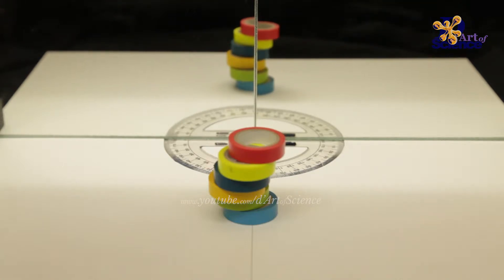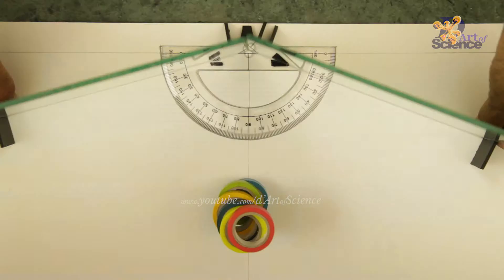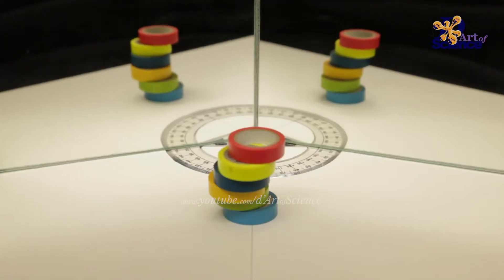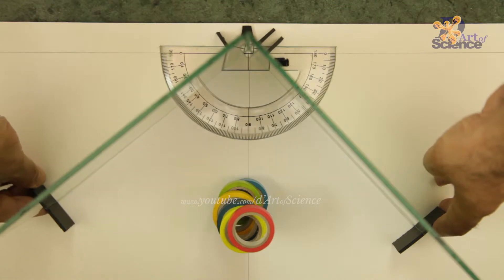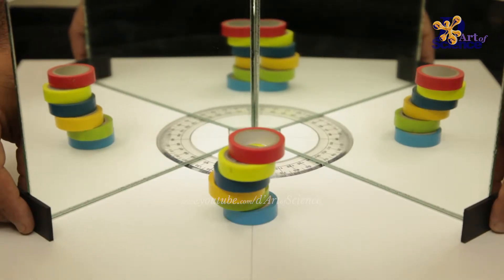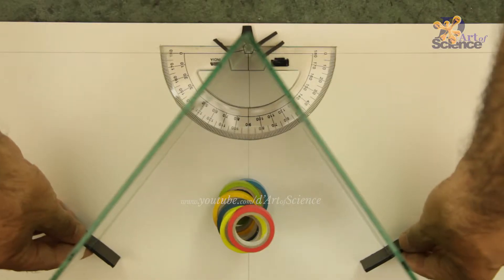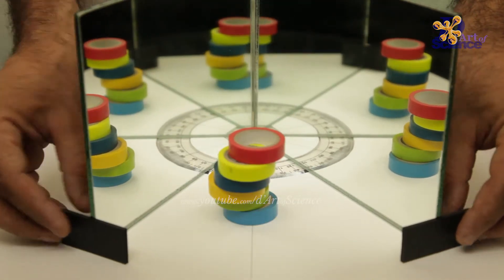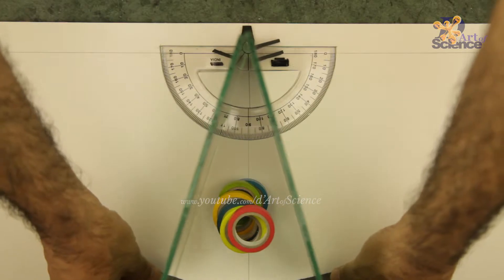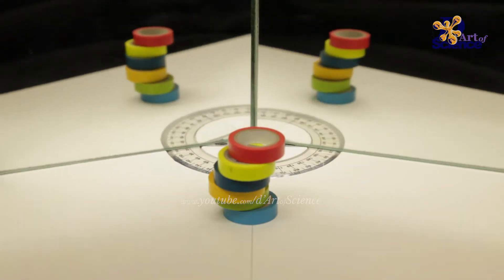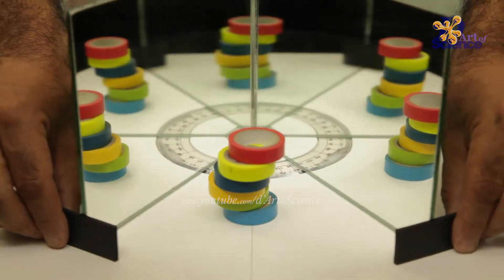At 180 degrees, the image formed is 1. At 120 degrees, there are 2 images formed. At 90 degrees, there are 3 images formed. At 60 degrees, there are 5. At 45, there are 7 images. So as the angle decreases, the number of images increases.